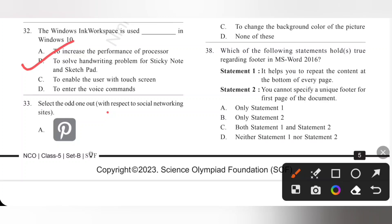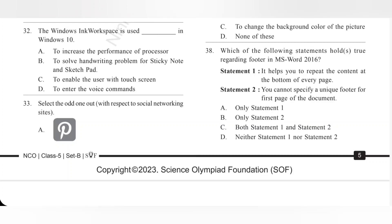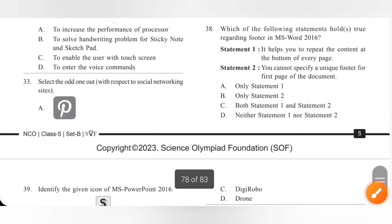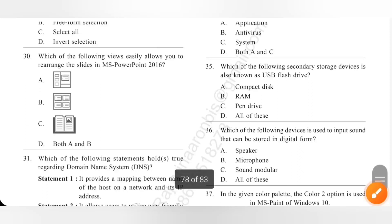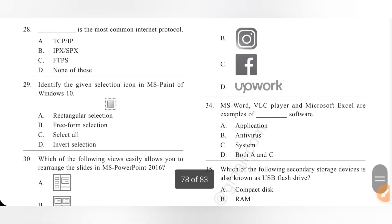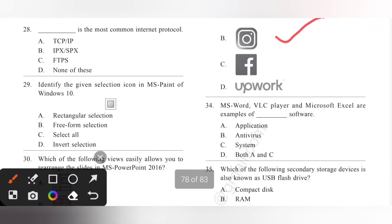Question 33: Select the odd one out with respect to social networking site. So, A, Pinterest, it is a social networking site and then B, Instagram, it is also social networking site. C, Facebook but Upwork is a freelancing site. So, the odd one out is option D. Option D is the correct answer.